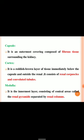The capsule is the outermost covering composed of fibrous tissue surrounding the kidney. The cortex is a reddish-brown layer of tissue immediately below the capsule and outside the renal medulla. It consists of renal corpuscles and convoluted tubules, and nephrons are usually located in the cortex portion.